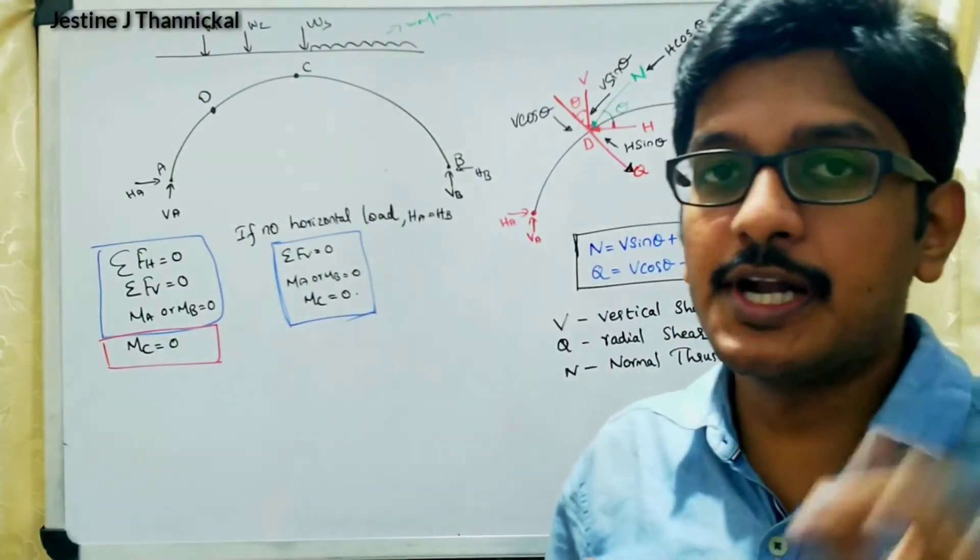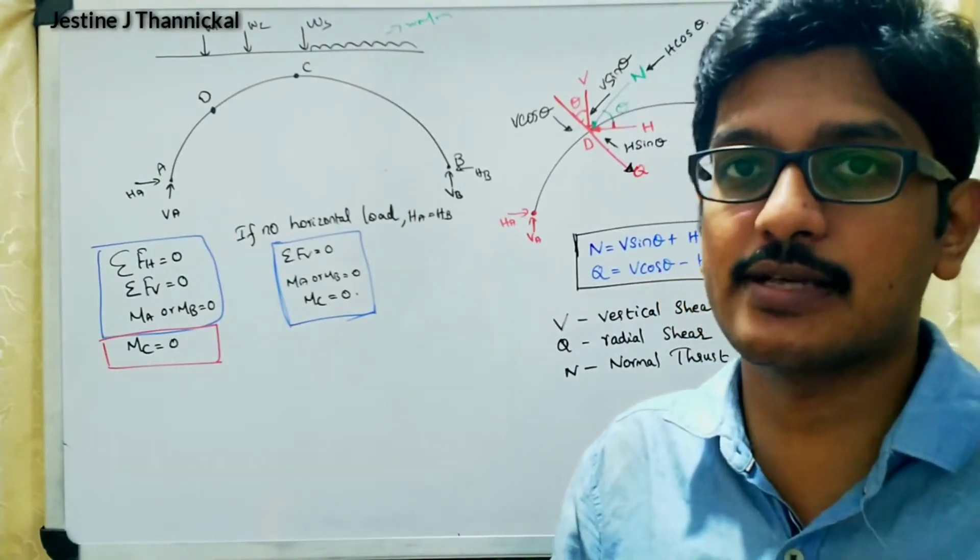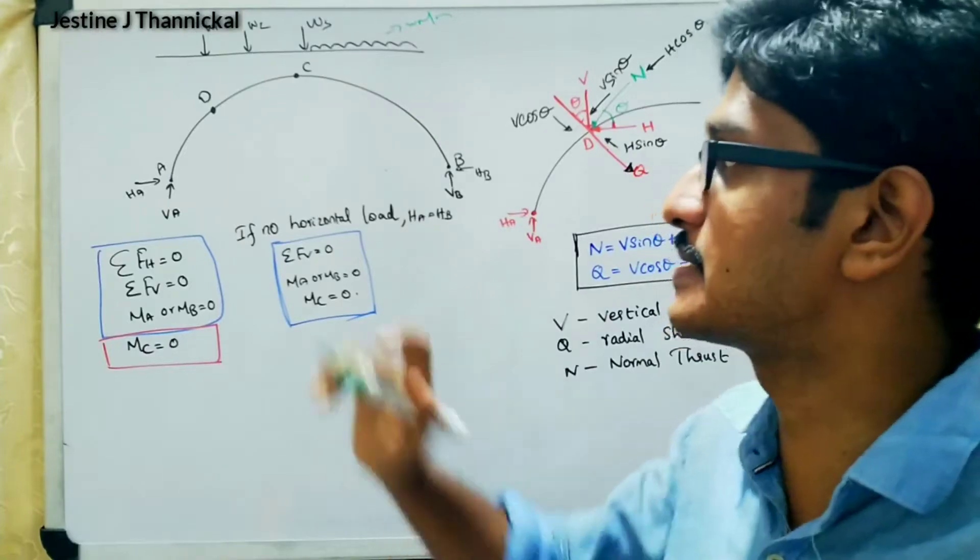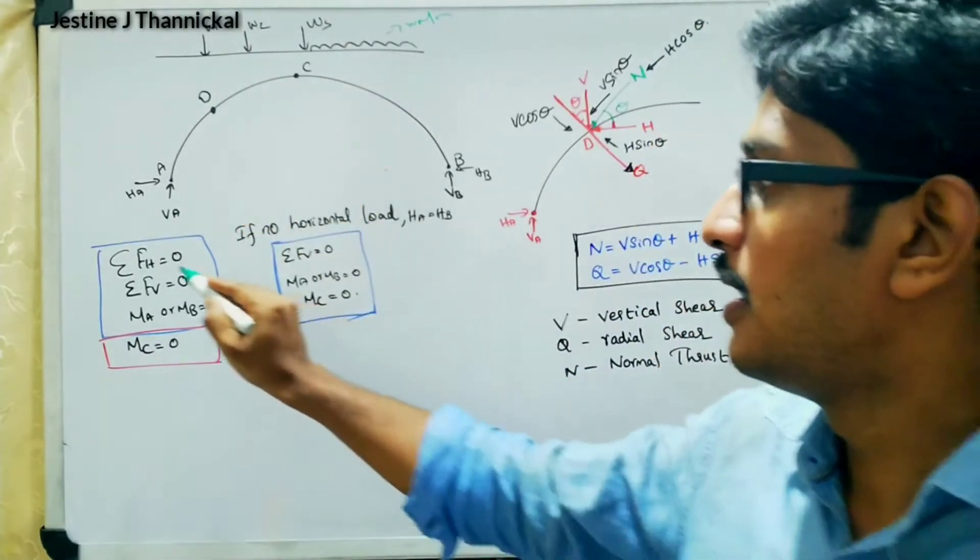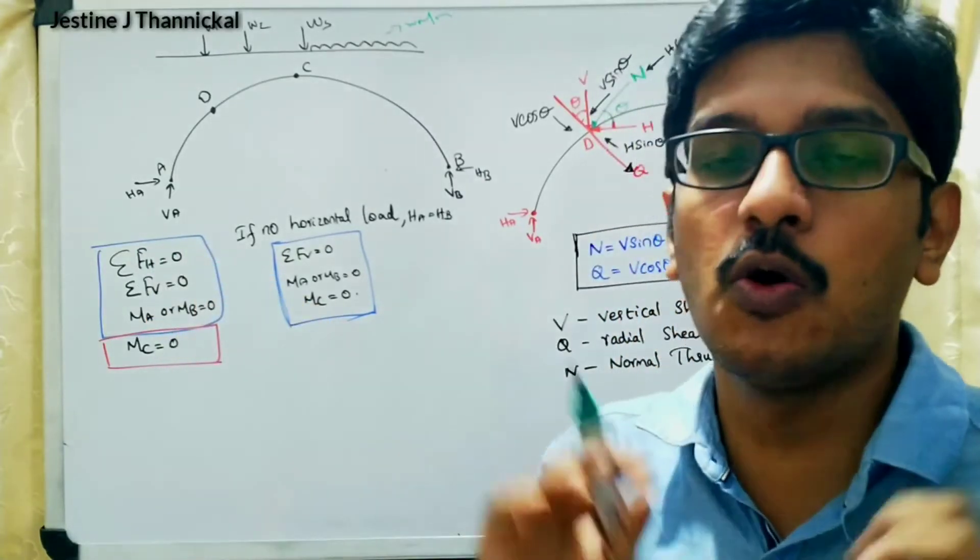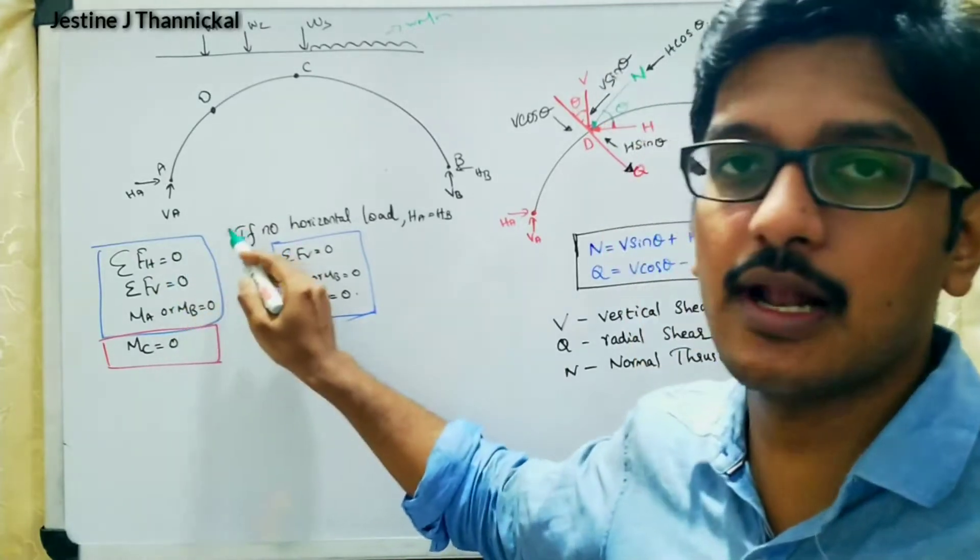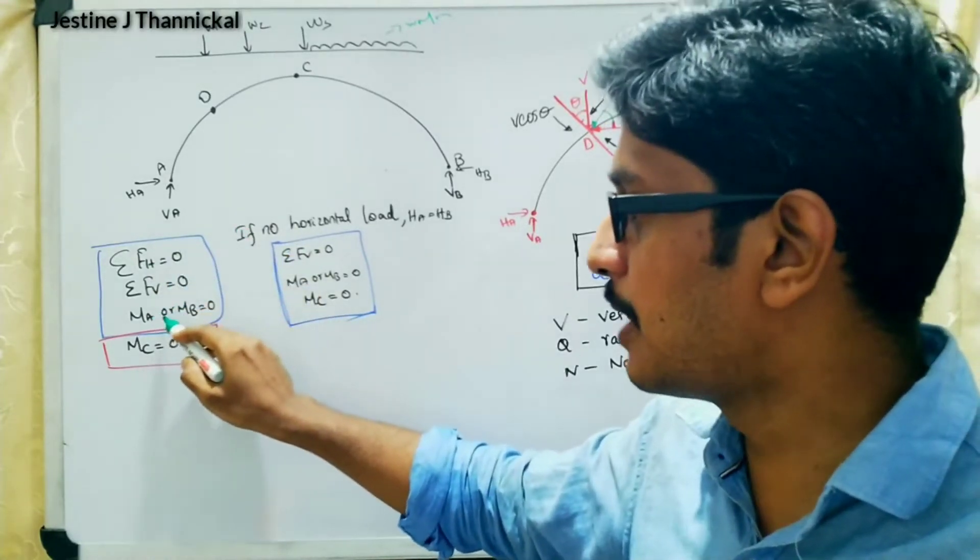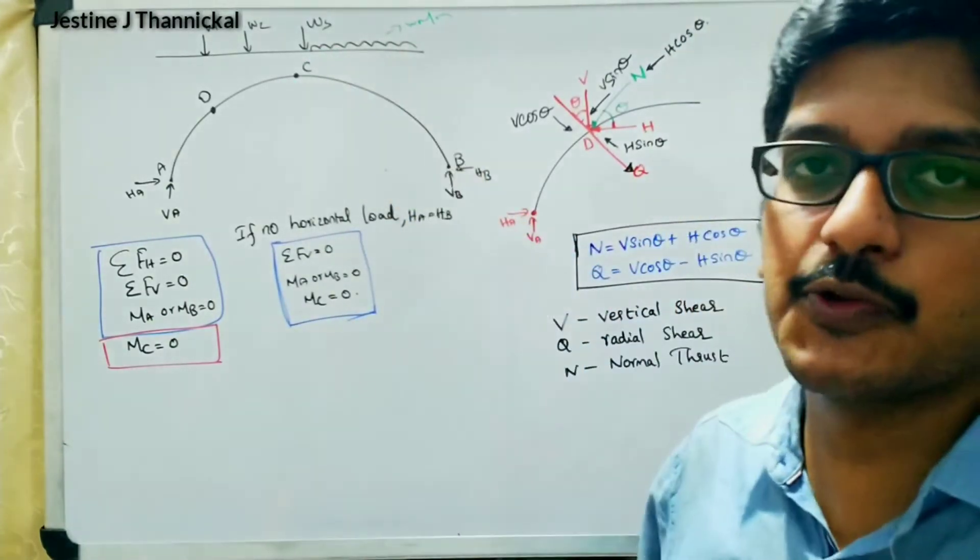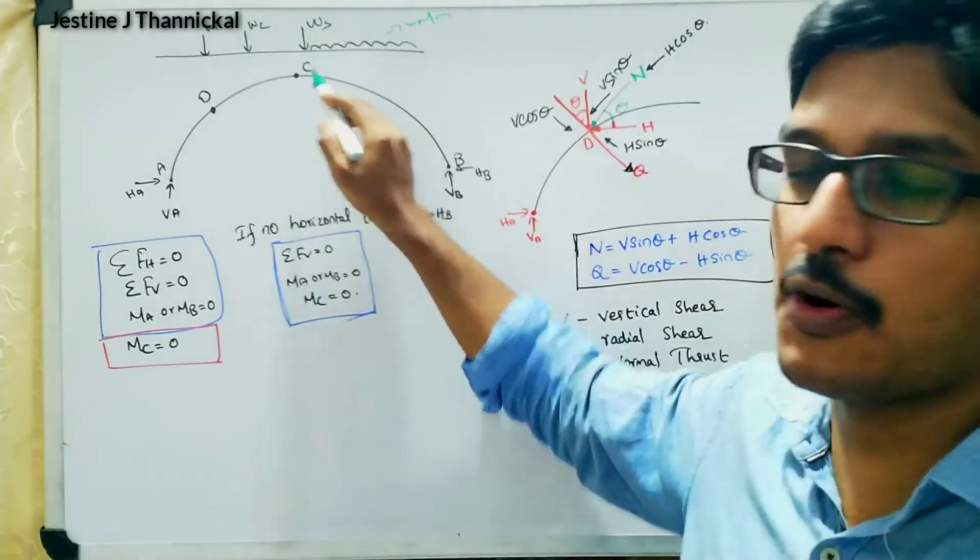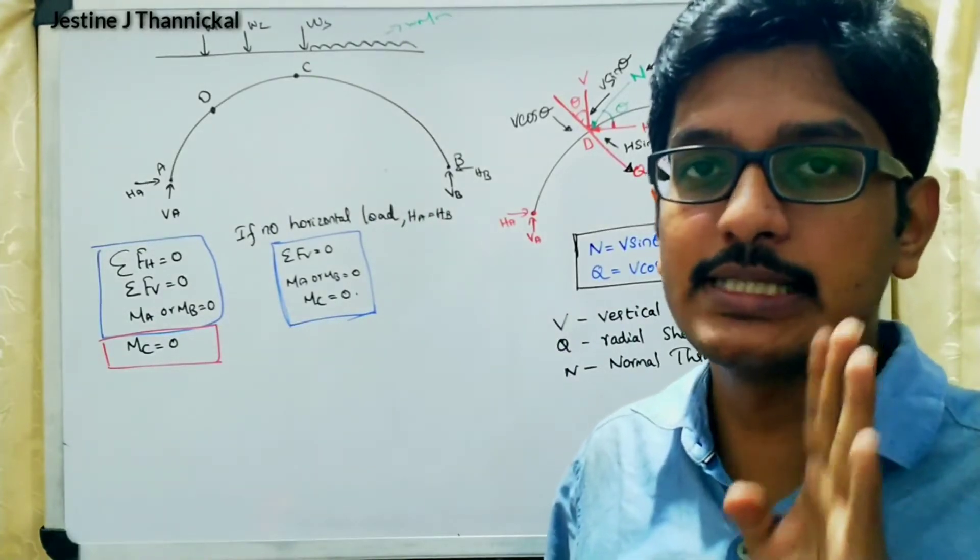Already mentioned in the different types of three-hinged arches, how many equilibrium equations are there? Four equilibrium equations in this case. How is it obtained? If we consider all the horizontal components, then there will be horizontal equation. Then vertical should be taken, then moment about A or B should also be taken. Then this is the additional equation: moment about point C. So there will be four equations in the case of three-hinged arches.